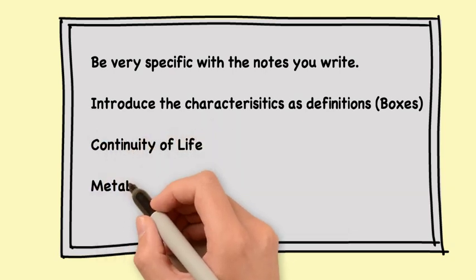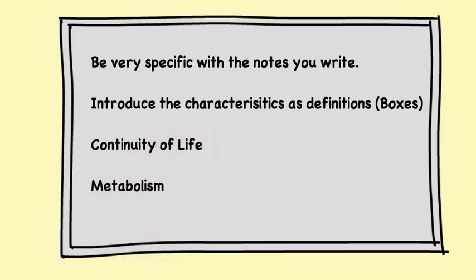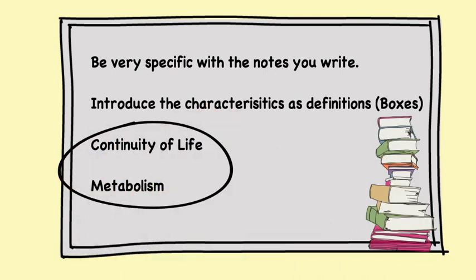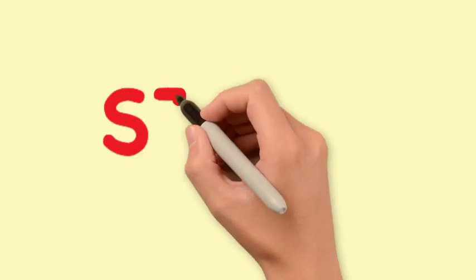Also, it's a good opportunity to look for other definitions in that chapter. For example, continuity of life and metabolism are worth learning. So how do you go about studying? How do you start studying Leaving Cert biology?